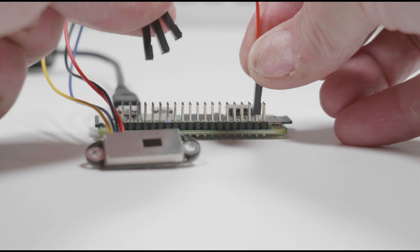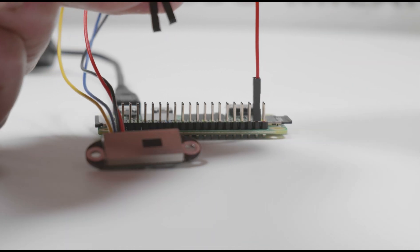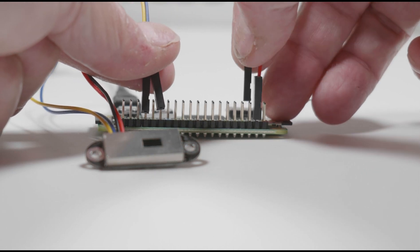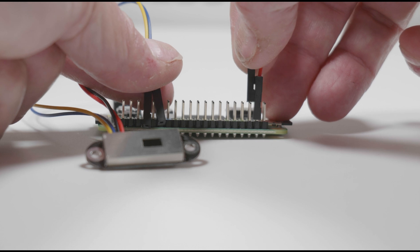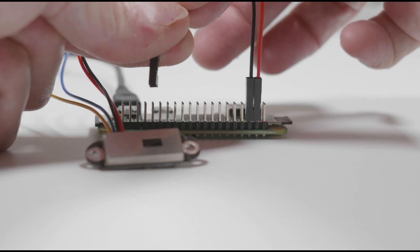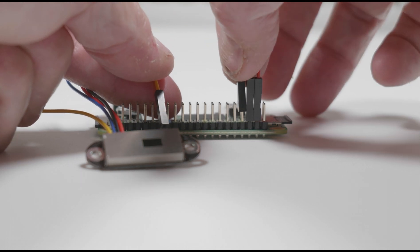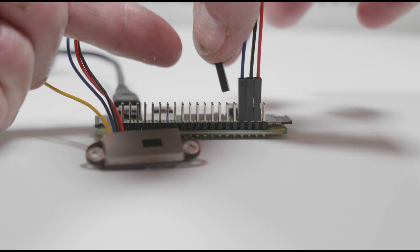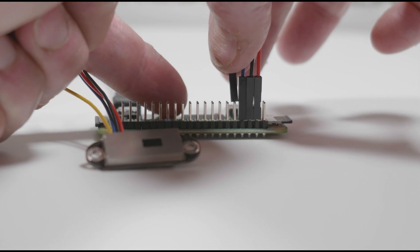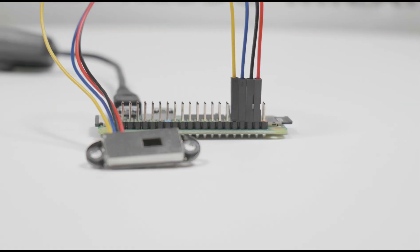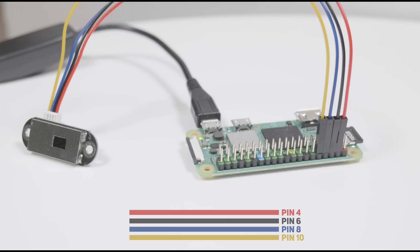The red wire is 5 volts and goes to pin 4. The black wire goes to pin 6 for ground 0 volts. The blue transmit wire — we won't use it but we'll plug it in anyway — goes to pin 8. The yellow receive wire goes to pin 10. They're all in a row: red, black, blue, then yellow. If your wiring looks the same as mine, we're good to go.